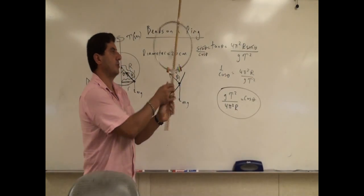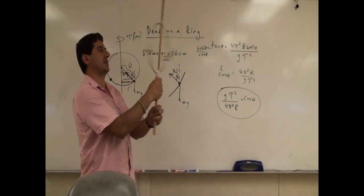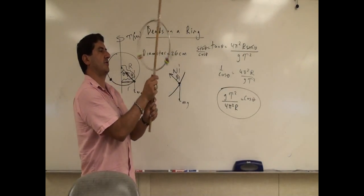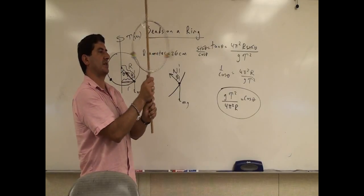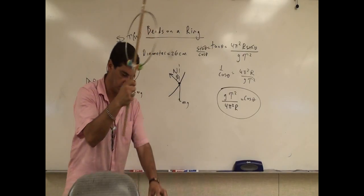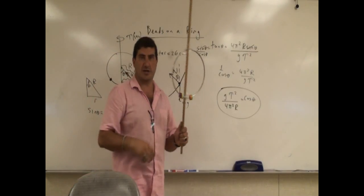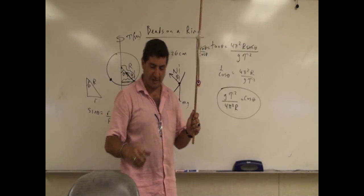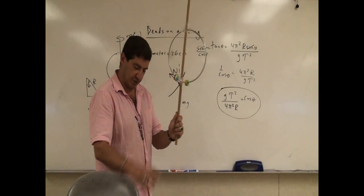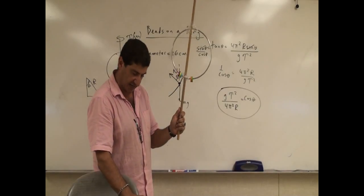So let us measure 20 cycles of the period and then approximately notice where the beads are resting. Ready? Go. 1, 2, 3, 4, 5, 6, 7, 8, 9, 10, 11, 12, 13, 14, 15, 16, 17, 18, 19, 20, okay? So it's kind of hard to do this because I'm trying to both time it and do the revolutions. So let's do that again.